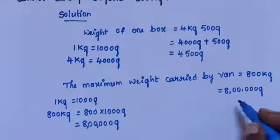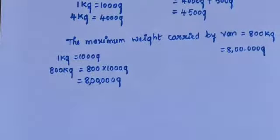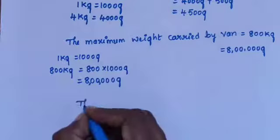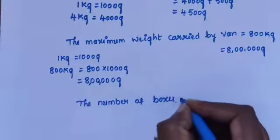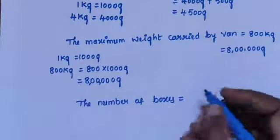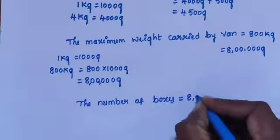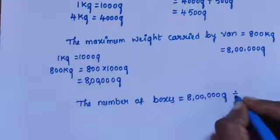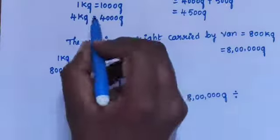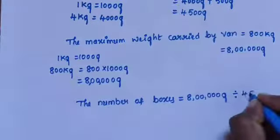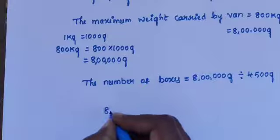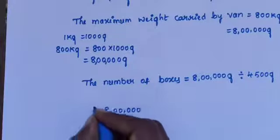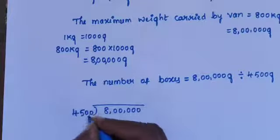The maximum weight carried by the van is 800,000 gram, which is 8 lakh gram. To find how many boxes are needed, the number of boxes is equal to 800,000 gram divided by the weight of 1 box, which is 4500 gram. So we calculate 8 lakh divided by 4500.